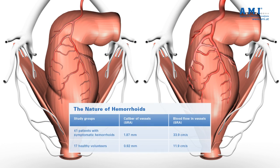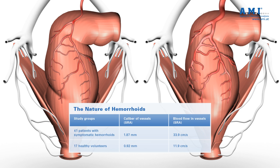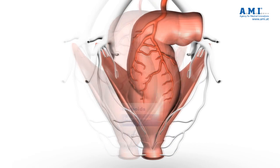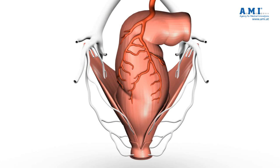these arteries are almost twice as large in diameter, with a blood flow three times greater than in healthy patients. This leads us to conclude that the increased arterial supply is responsible for the development of abnormally large hemorrhoids.